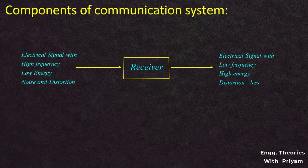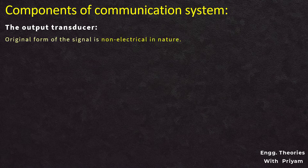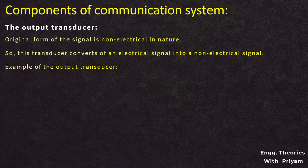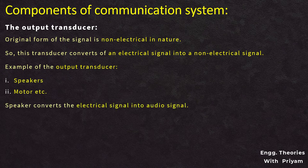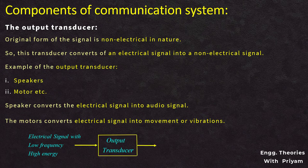The next element is the output transducer. The output signal of the receiver is given as input to the output transducer. Since the original form of the signal from the sender is a non-electrical signal, this transducer converts the electrical signal received by the receiver into a non-electrical signal. In short, the output transducer converts the electrical signal back into its original form. Examples of output transducers are speakers, motors, and lamps. A speaker converts the input electrical signal into an audio signal, and a motor converts the input electrical signal into movement or vibration. The input signal to the output transducer is a low frequency, high energy, distortion-free electrical signal, and the output is a low frequency, high energy, distortion-free non-electrical signal.